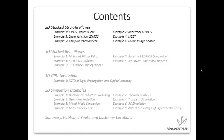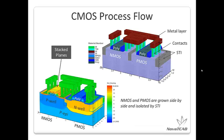Let's go through a few examples, starting with 3D stacked straight planes, then the more advanced bent planes method, GPU simulation, some 2D simulation examples, and finally a summary. The first example is the CMOS process flow. This structure is created by stacking the straight planes — NMOS and PMOS are grown side by side and isolated by the STI.